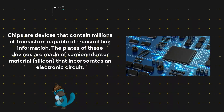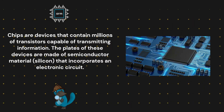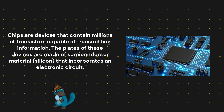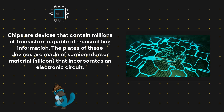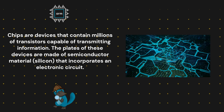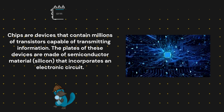What is a chip? Chips are devices that contain millions of transistors capable of transmitting information. The plates of these devices are made of semiconductor material — silicon — that incorporates an electronic circuit.